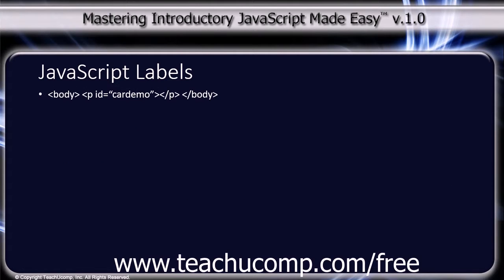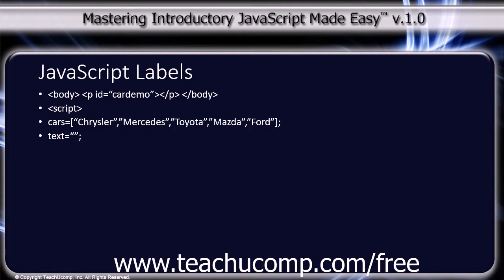The code starts with the body tag, a paragraph tag with an id equal to 'car demo', the close paragraph tag, the close body tag, and the open script tag. Then we declare: cars equals bracket with 'Chrysler', 'Mercedes', 'Toyota', 'Mazda', 'Ford', close bracket semicolon. Text equals empty quotes semicolon. Then 'list' colon — that's our label.